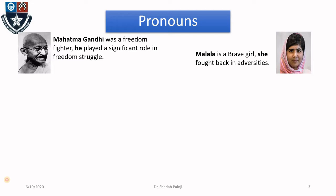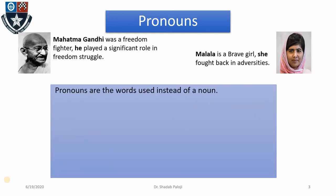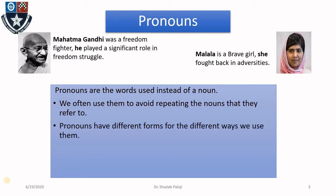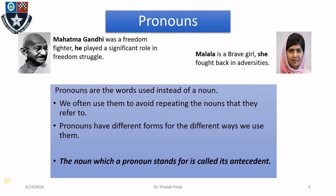Such kind of words which are referring to the nouns are called as pronouns. Pronouns are the words used instead of a noun. We often use them to avoid repeating the noun that they refer to. For example, saying 'Malala is a brave girl. Malala fought back in adversities' looks very weird, and therefore we use the pronoun 'she' over there. Also, pronouns have different forms for different ways we use them, which we will see in the coming slides. The nouns that the pronoun stands for are also called as antecedents.